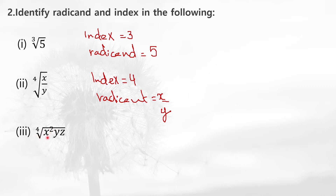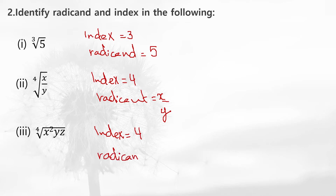This radical contains the expression x squared yz. You have to look at it completely — don't miss anything. Whatever is inside the radical is completely the radicand. So x squared yz is the radicand and 4 is the index. Index is 4 and radicand is x squared yz.